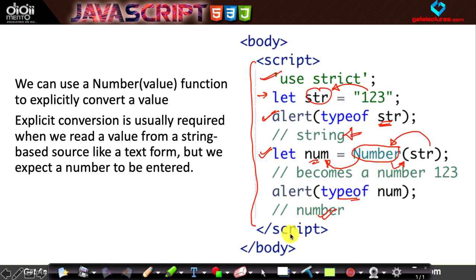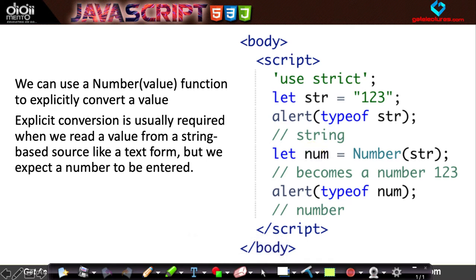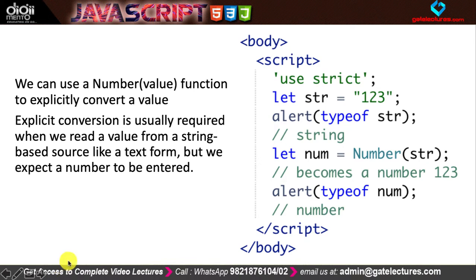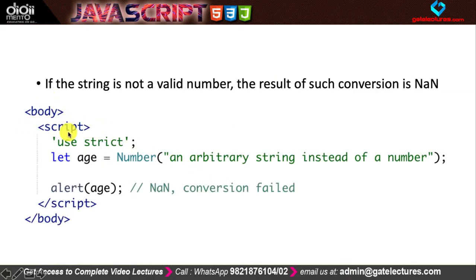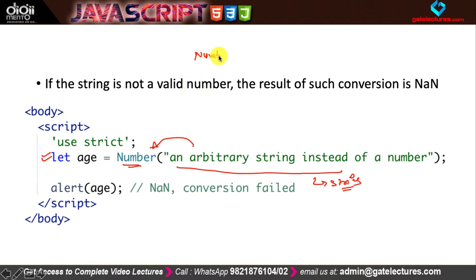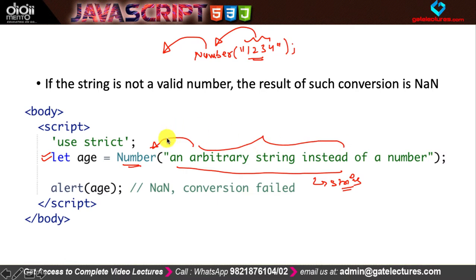Most of you are familiar with other programming languages so this isn't too difficult. Here I have 'let age = Number("an arbitrary string")'. This entire value is a non-numeric string, so it cannot be converted to a number. But Number('1234') works fine since those are numeric characters. When conversion fails, the output is NaN — meaning 'Not a Number', indicating it is not a valid numeric value.